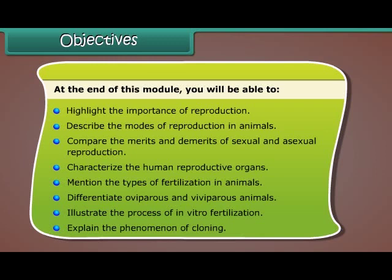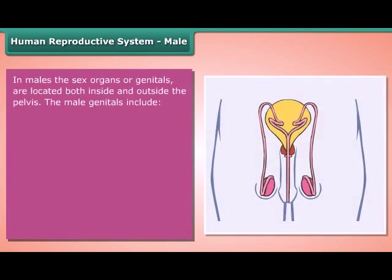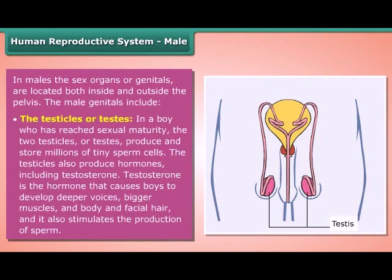Human reproductive system — male. In males, the sex organs or genitals are located both inside and outside the pelvis. The male genitals include the testicles or testes. In a boy who has reached sexual maturity, the two testicles or testes produce and store millions of tiny sperm cells.